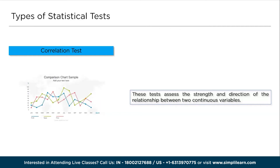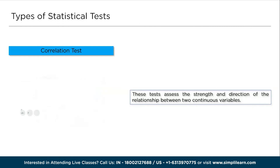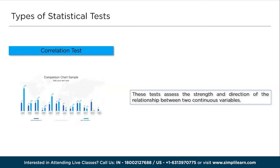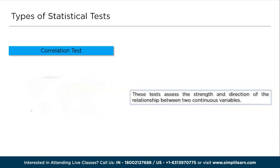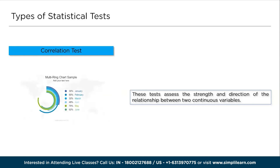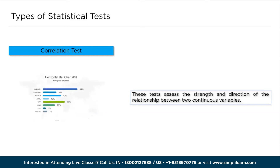Other correlational tests include Spearman's rank correlation coefficient for assessing monotonic relationships and Kendall's rank correlation coefficient for measuring the strength of association between variables. Correlation tests help identify the degree and nature of the relationship between variables, aiding in understanding patterns and making informed decisions.